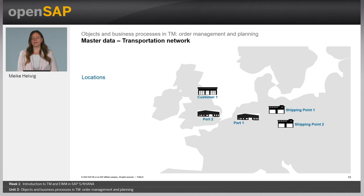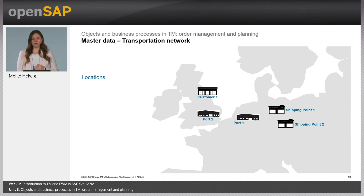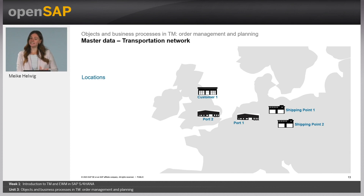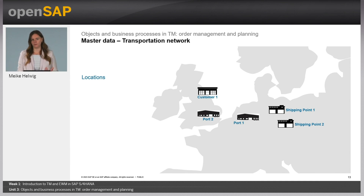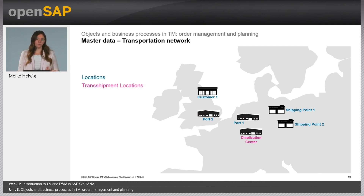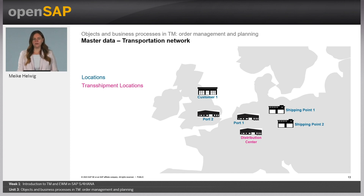The first object we need is locations in TM. Your customers and your shipping points all need locations in TM. On top of that, we have TM-only locations like a port or a railway station — locations you only need for a transportation planning process, not in the S/4HANA core SD and MM modules. We also have so-called transshipment locations, like distribution centers and hubs. They are used for consolidation and deconsolidation in the whole planning process — so you can really repack something or put it together on another truck to have good utilization throughout the transportation planning process.